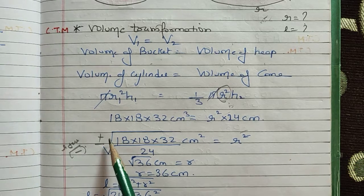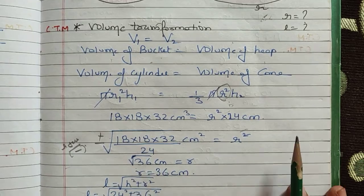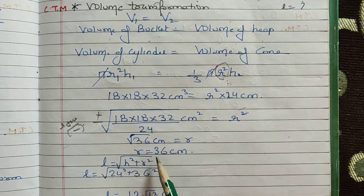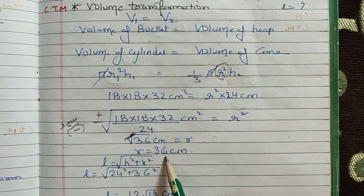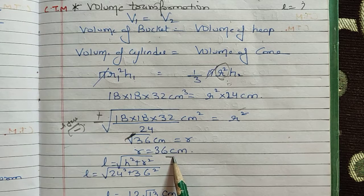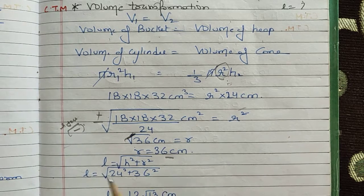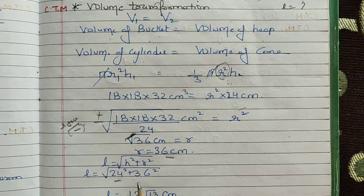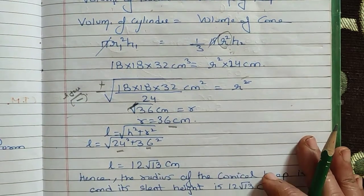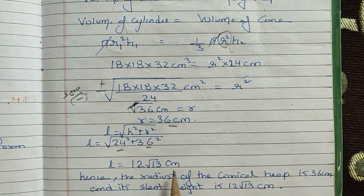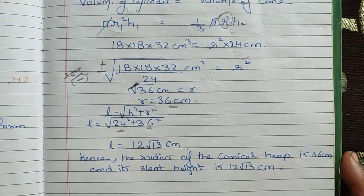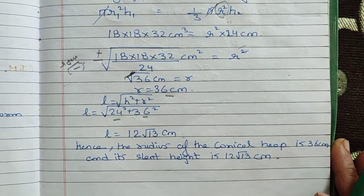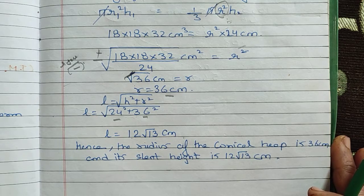We reject the negative value and take the positive one. So the radius r = 36 cm. Now we calculate the slant height using l = √(h² + r²), where h = 24 and r = 36. Solving this square root gives the slant height as 12√13 cm. Hence, the radius of the conical heap is 36 cm and its slant height is 12√13 cm.